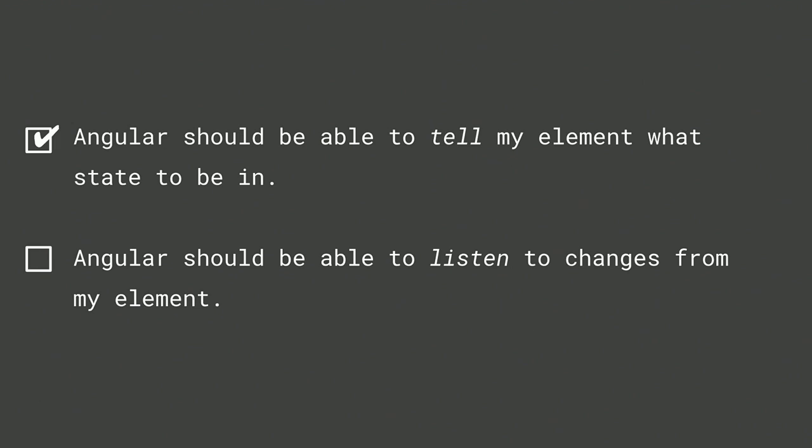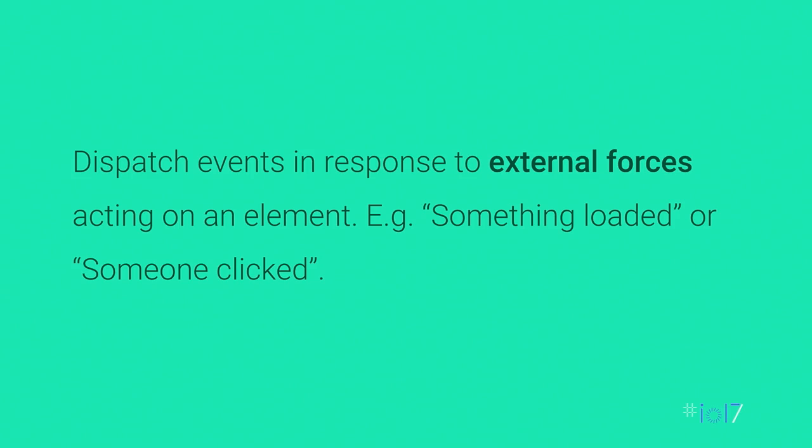Now Angular can set either an attribute or property and query the checked property for current state. For telling Angular when something changes, I have a rule: dispatch DOM events only when there's an external force acting on the control — a user click, something loading, a timer firing. I don't dispatch events just because someone set a property on me, since the developer already knows they did that, and it avoids infinite loops with binding systems. I only do event dispatching in response to user action.